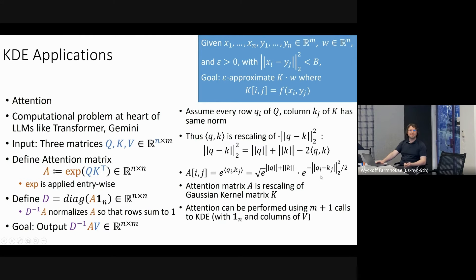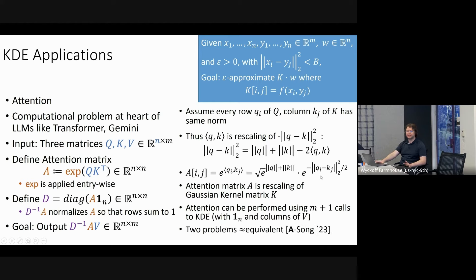You can perform attention by doing m+1 calls to kernel density estimation — once with the all-ones vector to get the D matrix, and then for each column of V. It's not hard to prove that the computational complexities of attention and KDE are basically equivalent: algorithms or lower bounds for one translate directly to algorithms or lower bounds for the other.